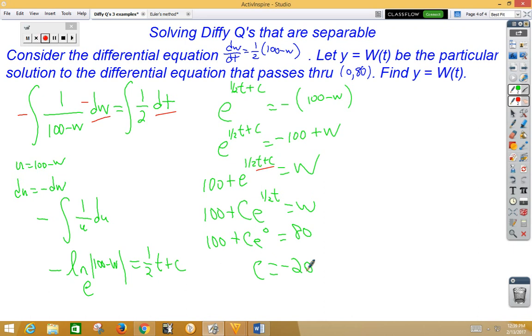So our final answer here would be w is equal to 100 minus 20e to the 1/2 t.